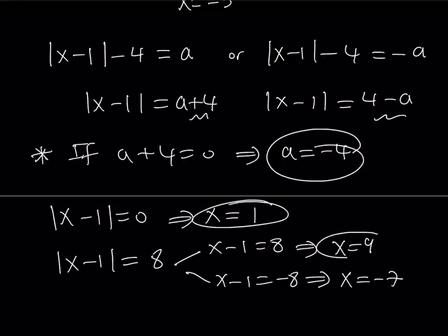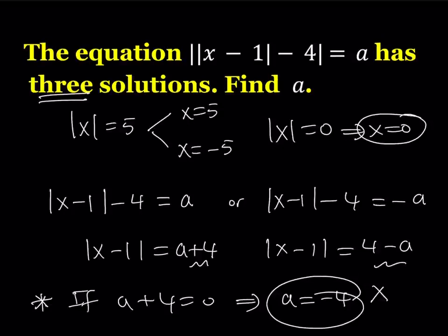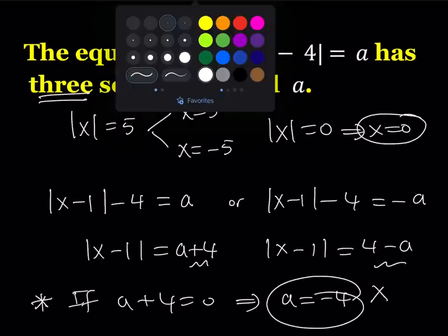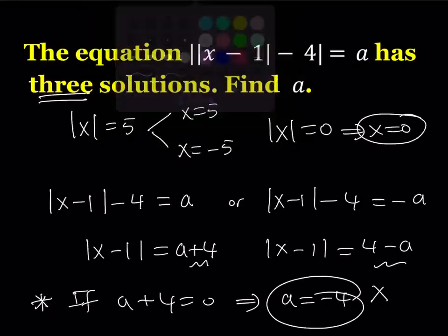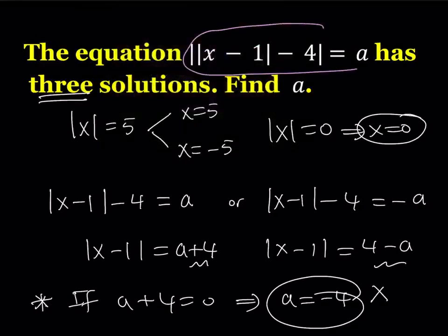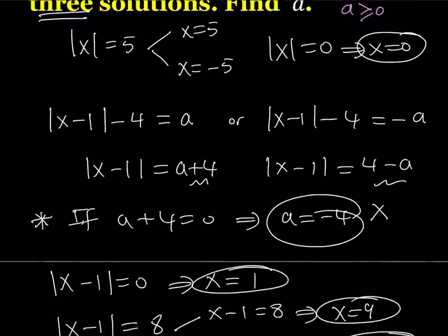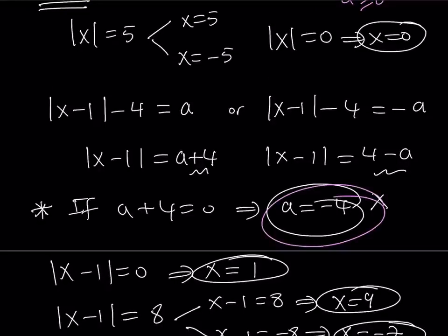So it looks like we got three solutions, right? So can we safely say that a equals negative 4? No, you can't. Why can't we say that? Because if you go back, you'll notice that the absolute value of something equals a. So we have this requirement. a needs to be non-negative, which means a is greater than or equal to zero. What happens in that case? Well, a equals negative 4 is not acceptable. I can't take this value. Therefore, that's not the solution.